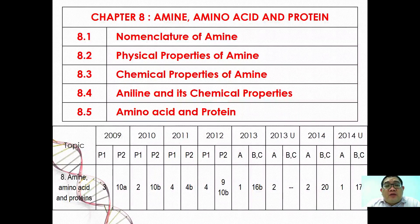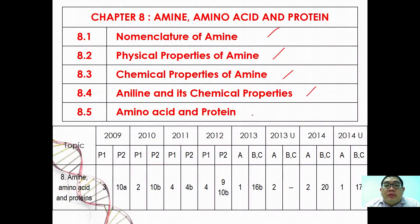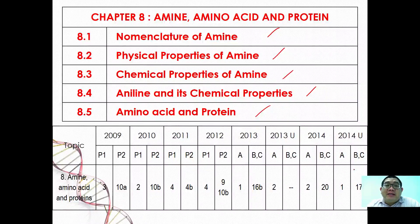We are first going to study about nomenclature of amine, followed by physical properties of amine, chemical properties of amine, aniline and its chemical properties, and finally amino acid and proteins. Throughout past question analysis, we find that this chapter is essential because it comes out in almost every past exam series.